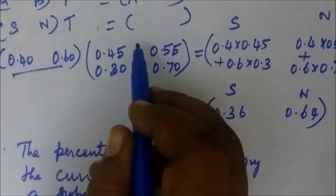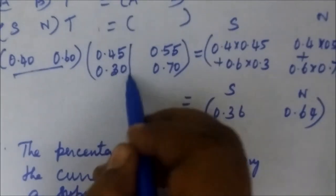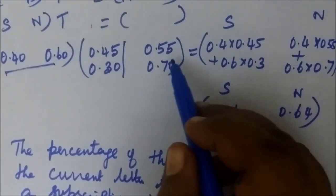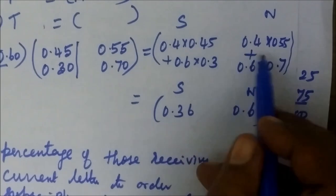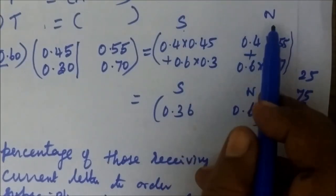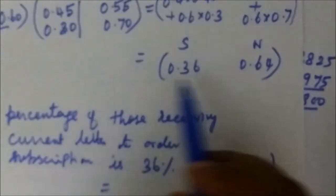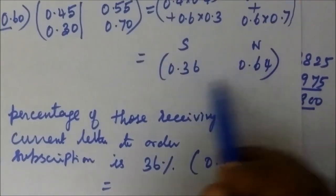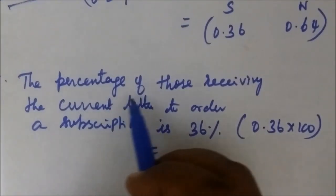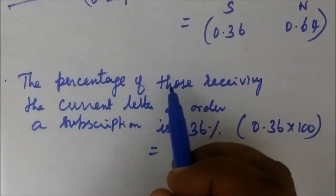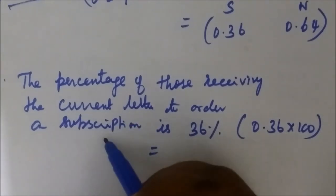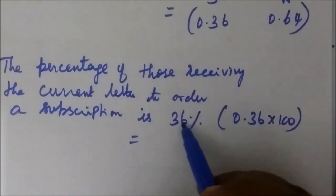First row, first column — multiply. First row, second column — it is given. This is subscription, this is not subscribed. Finally, the percentage of those receiving the current letter to order a subscription is 36%.